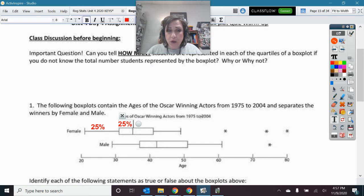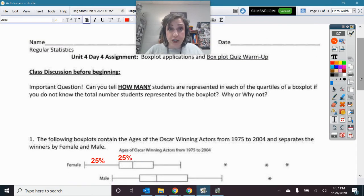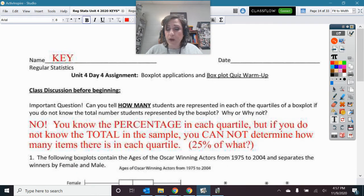What would we have to know to be able to determine how many people are in each quartile? Hopefully you understand that you need to know the total. You cannot tell how many people are in each quartile unless you know the total. You know that the percentage in each quartile is 25%, but if you do not know the total in the sample, you cannot determine how many items are in each quartile. 25% of what total? If you don't know what that 25% of the total is, you do not know.